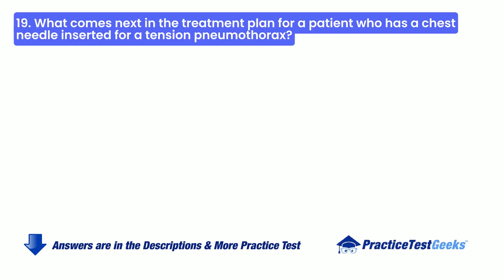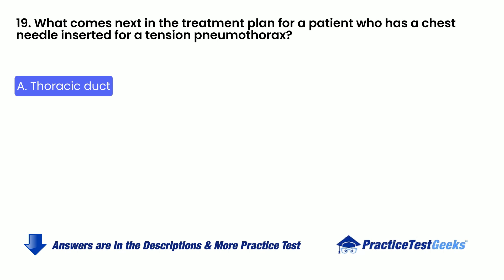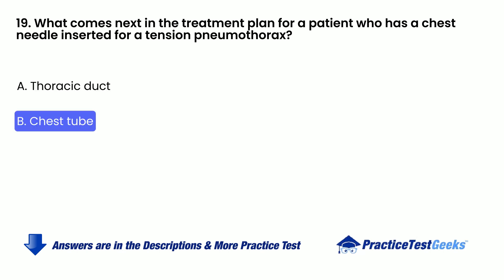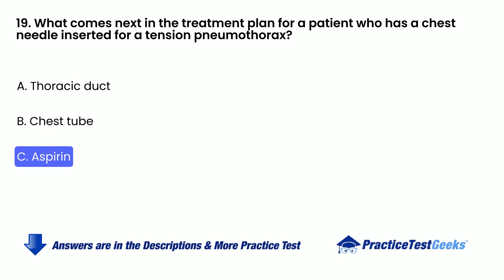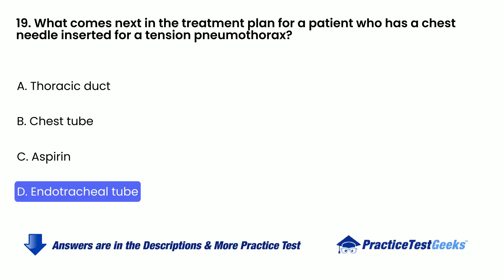What comes next in the treatment plan for a patient who has a chest needle inserted for a tension pneumothorax? A. Thoracic duct. B. Chest tube. C. Aspirin. D. Endotracheal tube.